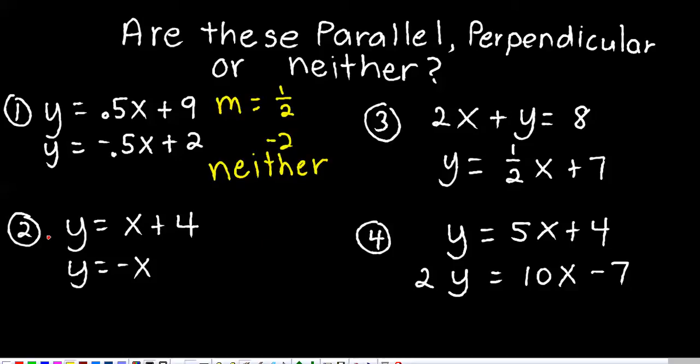On the second one, the slope of the first one is 1, and the slope of the second one is negative 1, and they are actually perpendicular. I'm going to, instead of writing out the word perpendicular, I'll use the perpendicular symbol that you should be familiar with right there. It looks like an upside down T.